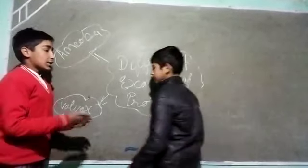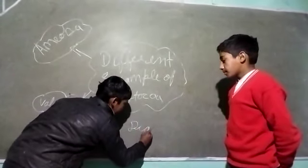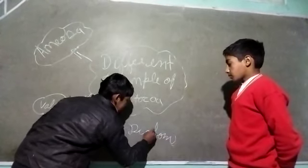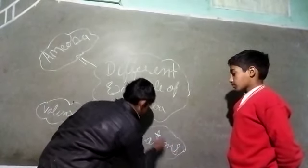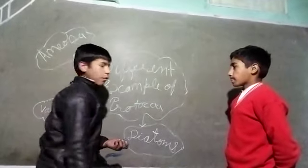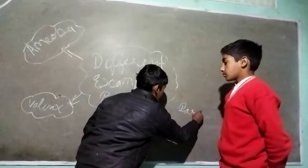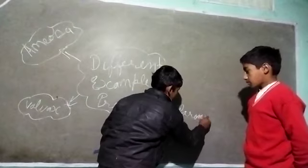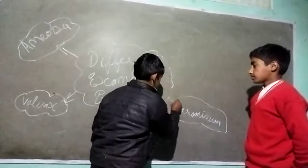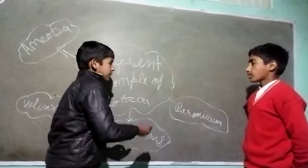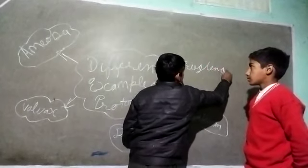Next, Dux. Thank you, Ishmith. Welcome, Dux. Dear friends, the third example is Paramecium — P-A-R-A-M-E-C-I-U-M. The fourth example is Euglena — E-U-G-L-E-N-A.